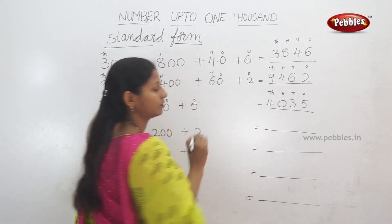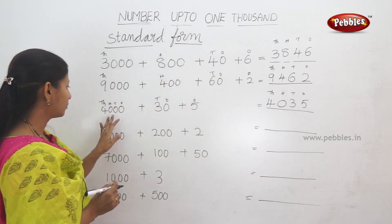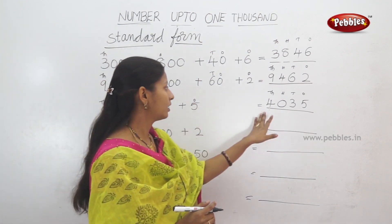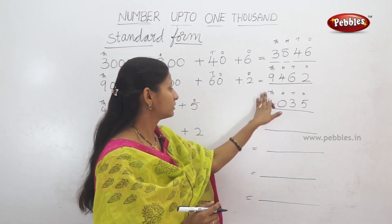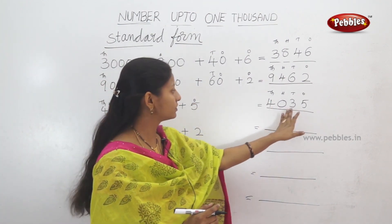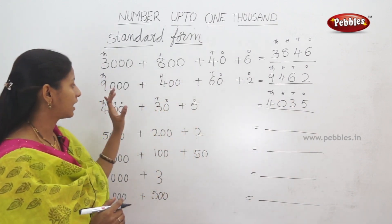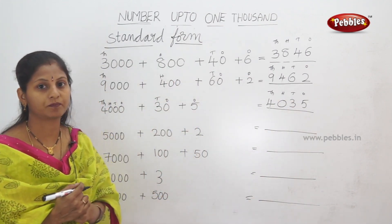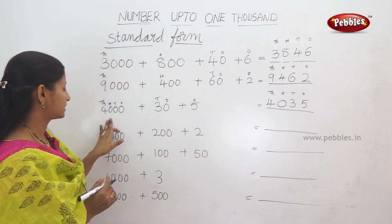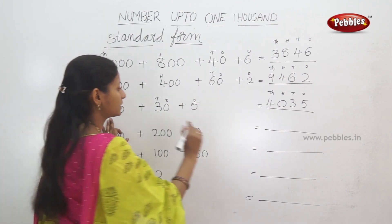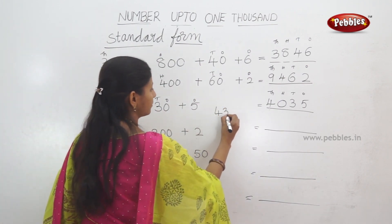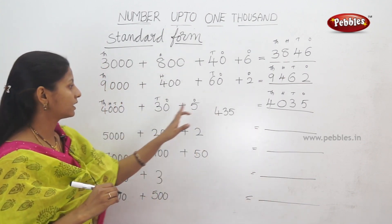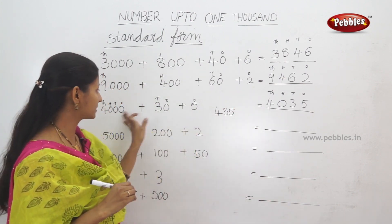4,000, 435. Like, 100s place is 0. So we have to say: 4000 plus 30 plus 5. Here is 400, 435, 4035. The 100s place is 0. Next: we have 435 numbers.